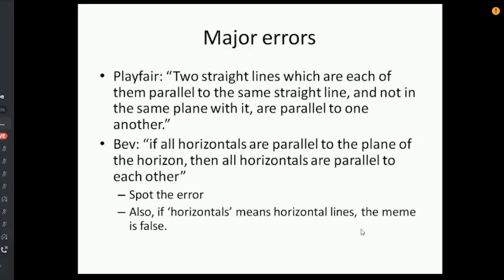Also if horizontals means horizontal lines, that statement is false. Now just think of this, we've got a straight line parallel to the plane of the horizon, and we've got another straight line also parallel to the plane of the horizon, and suppose both of those are in the same plane, and suppose one of them is pointing north-south, the other is pointing east-west, and those clearly those horizontal lines, while parallel to the plane of the horizon, are not parallel to each other. They're actually crossing at some point. Any questions on that?